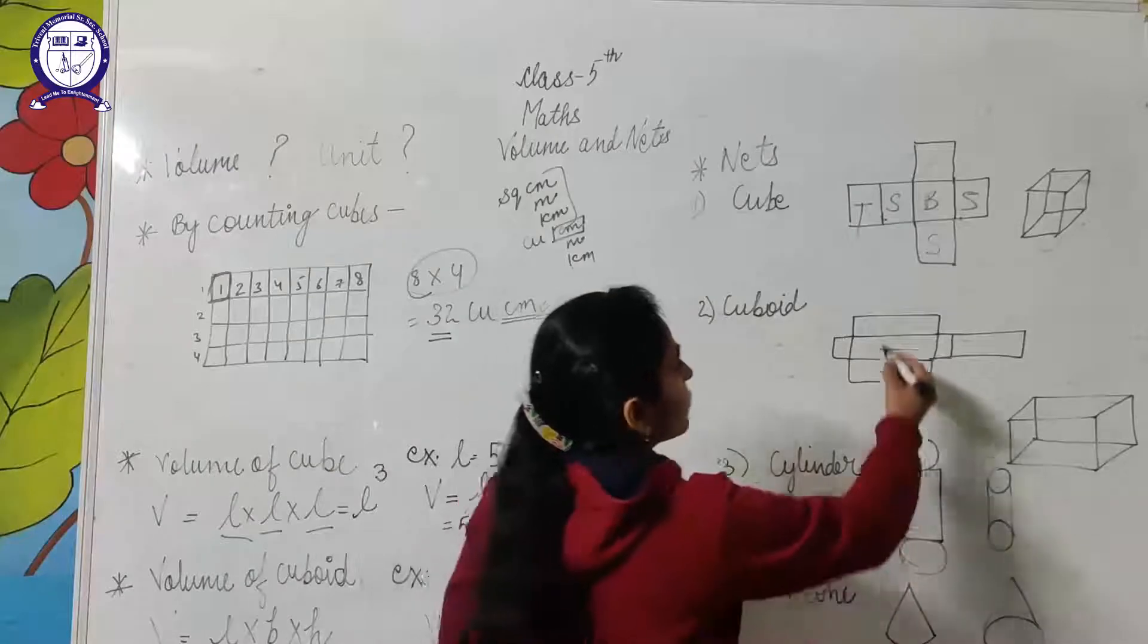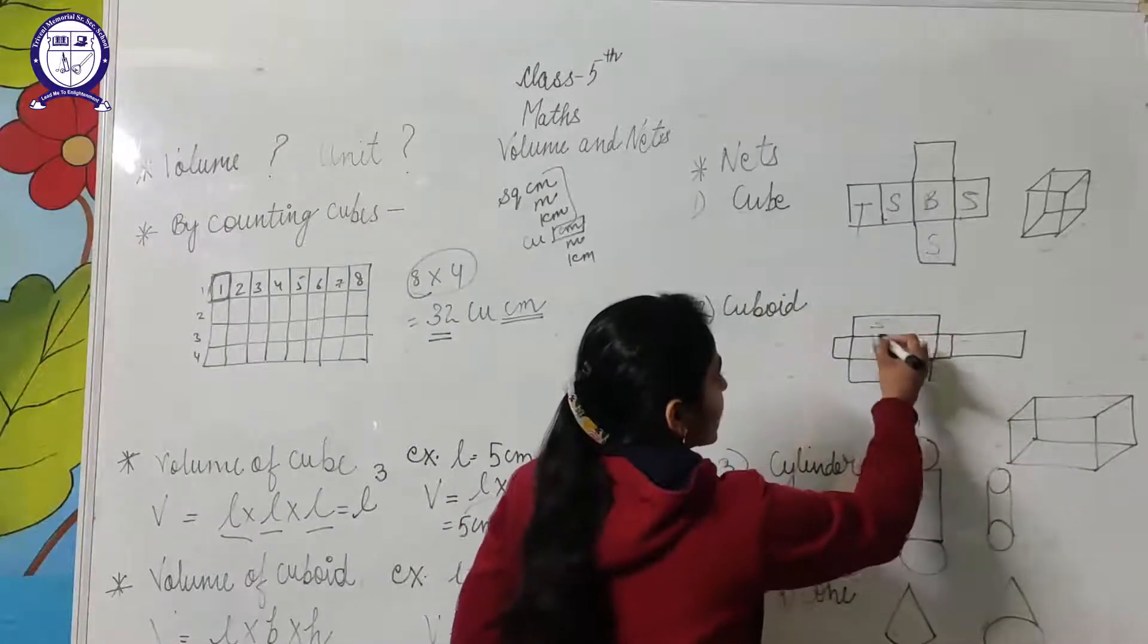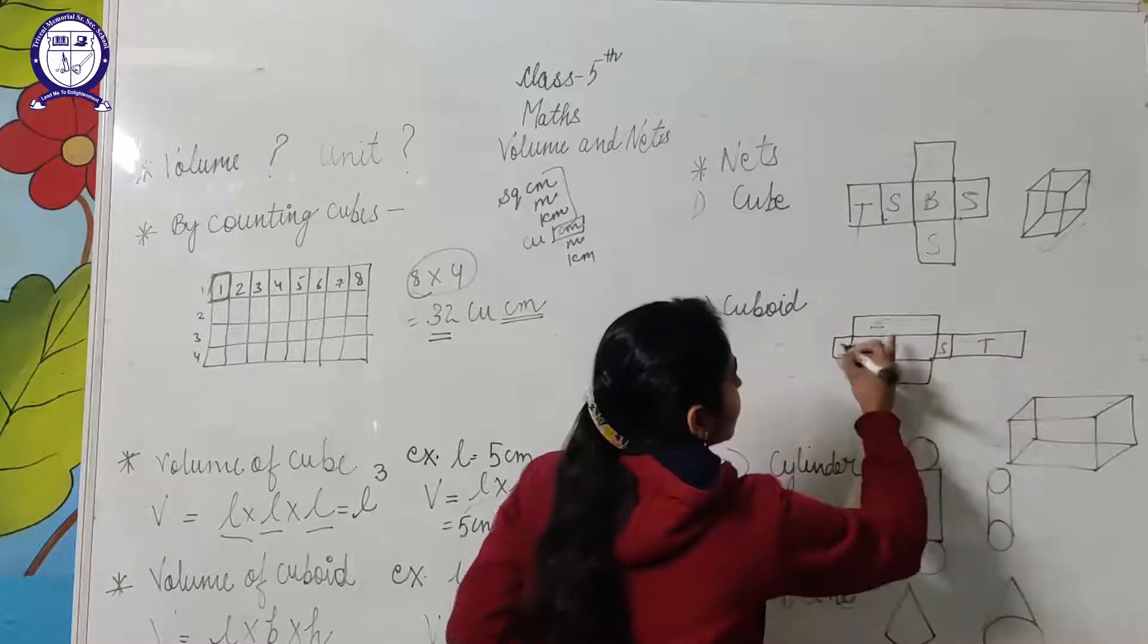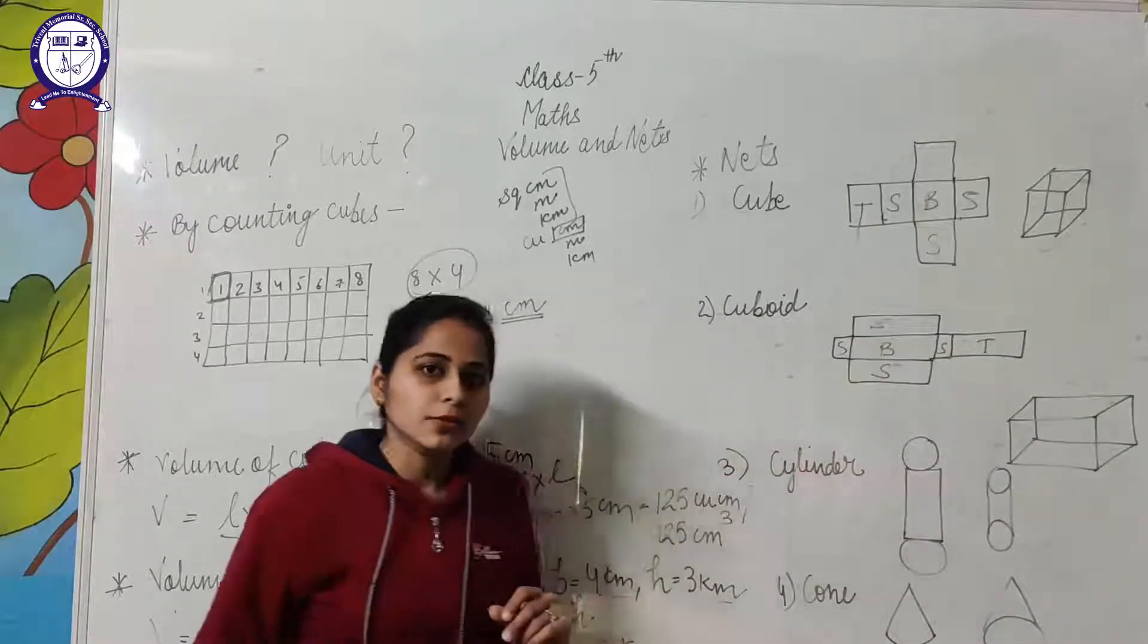In the case of the cuboid, we have four rectangles. This is the side view, this is the bottom view, side view, this is the top view. And both of these are left and right side views.